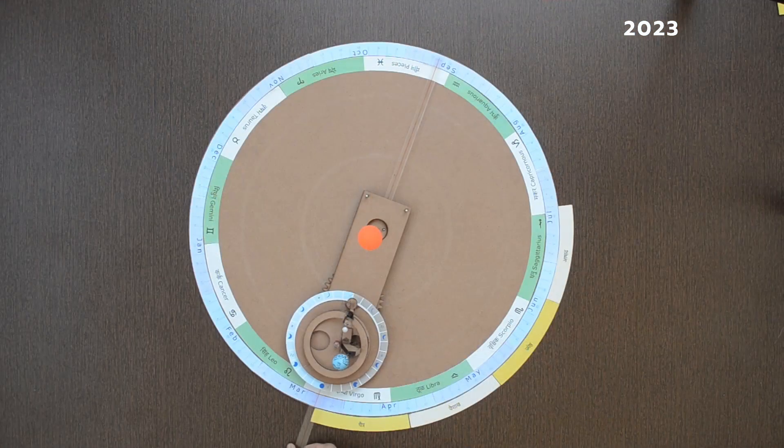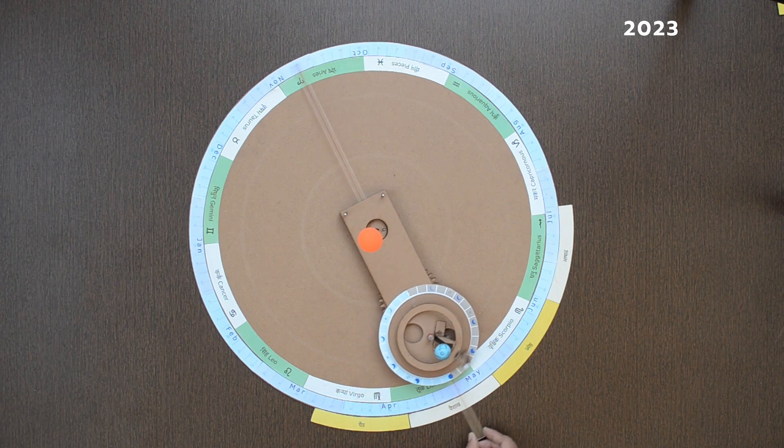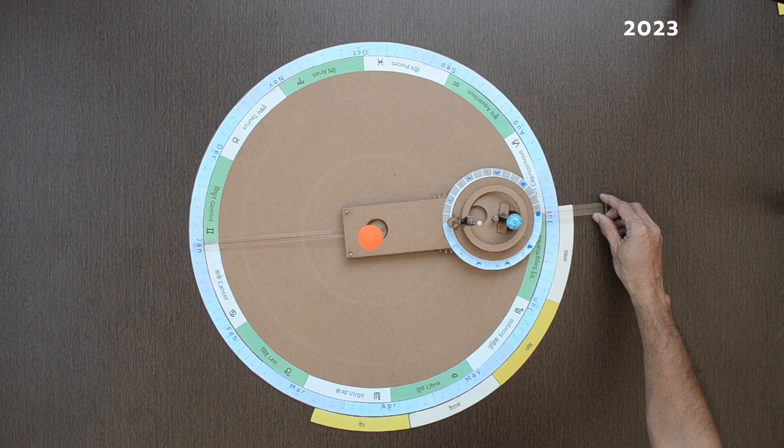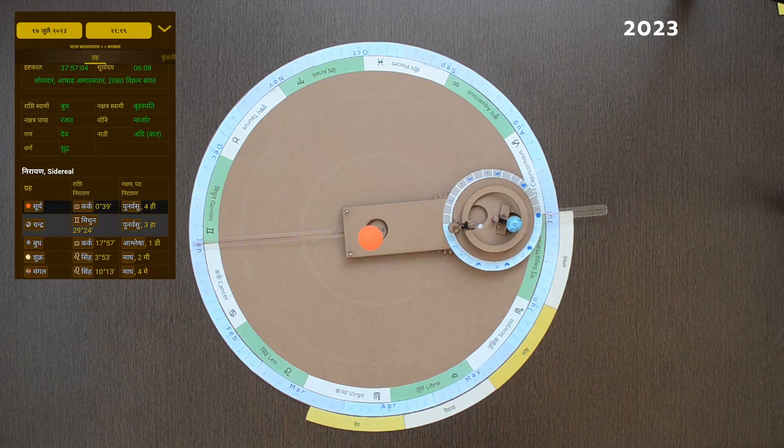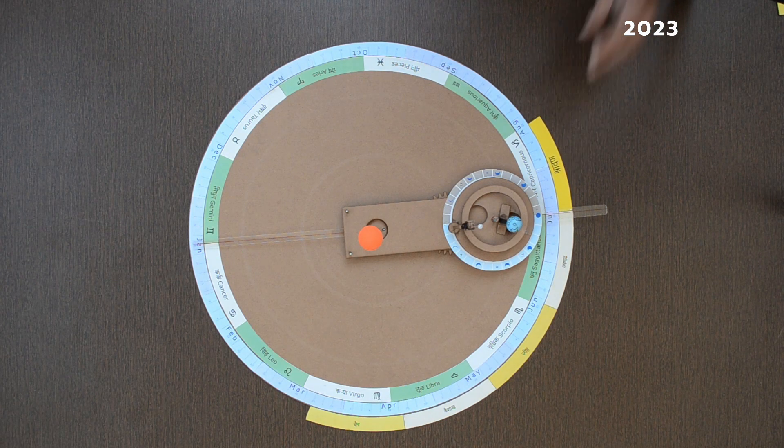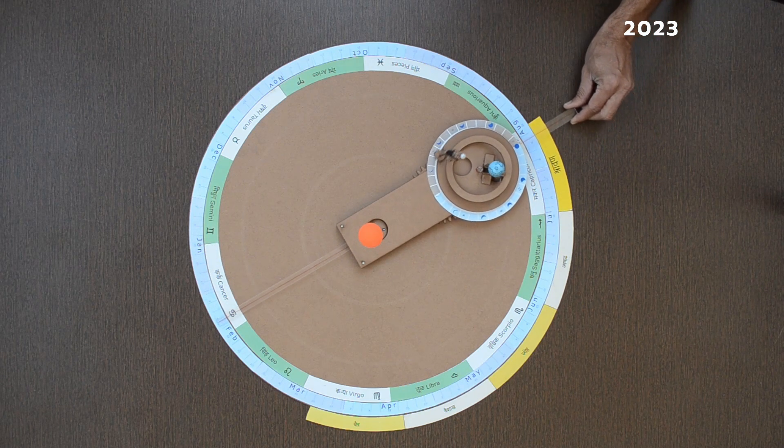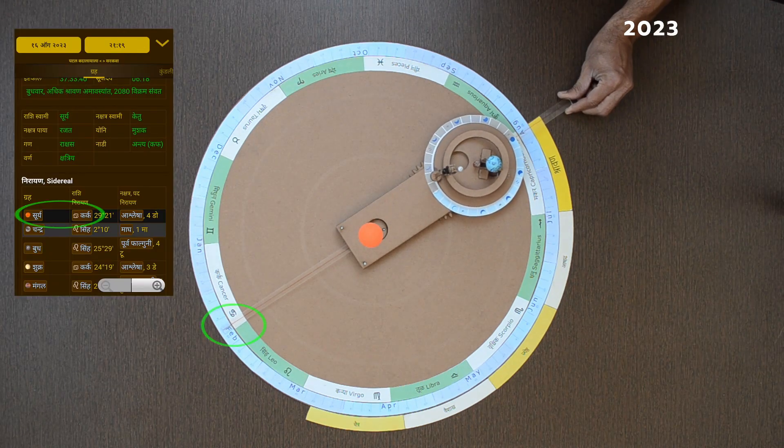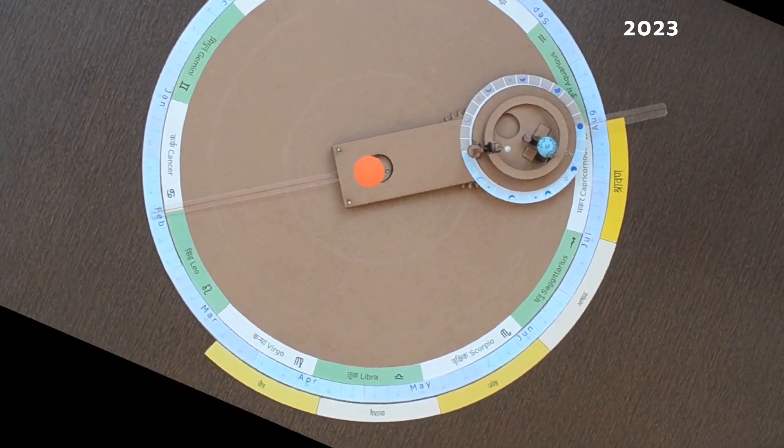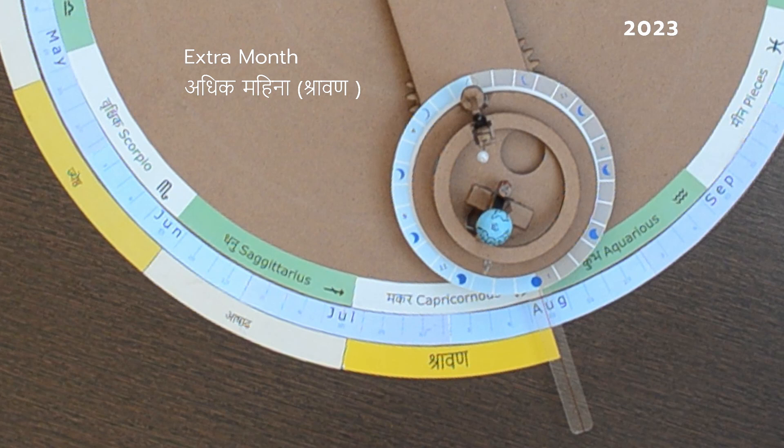Vaishak, Jeshta, Ashaad. 17th July is Amavasya or New Moon day and Sun is in Karka Rashi. Moon completes one cycle on 17th August but Sun is still in Karka Rashi. That means there is no transition of Sun to another Rashi during this period. This month is considered as extra month or Adhikmas. Adhik Shravan.